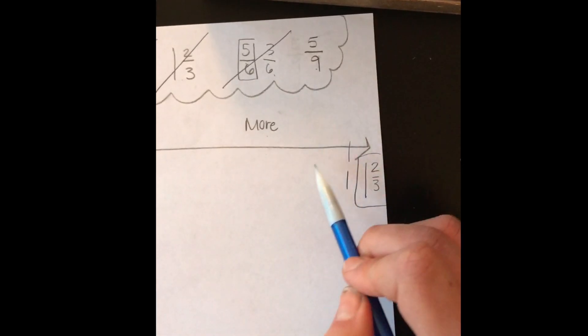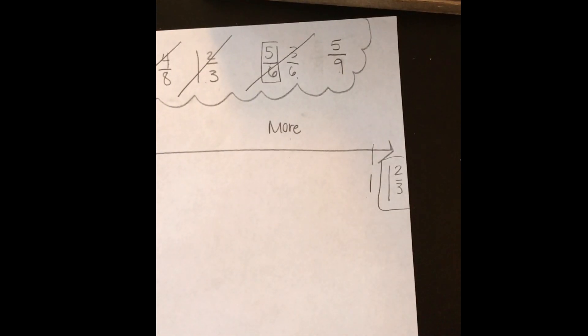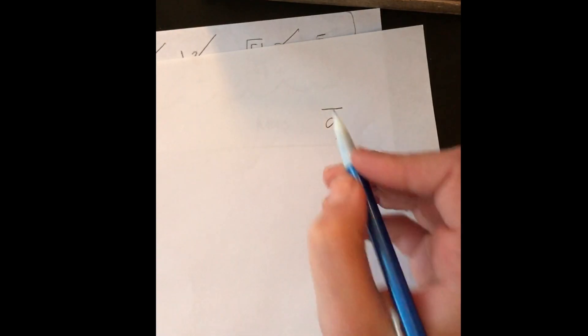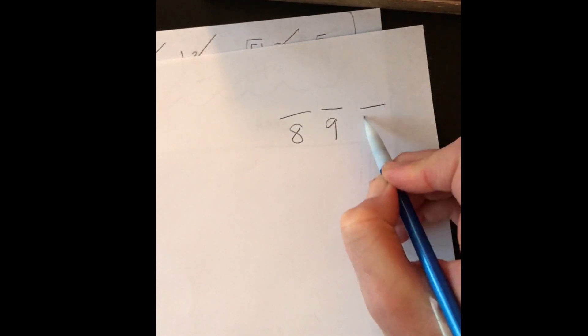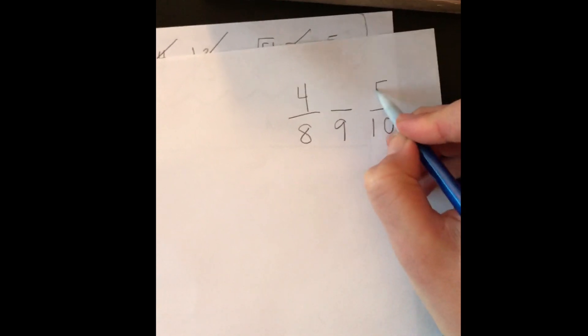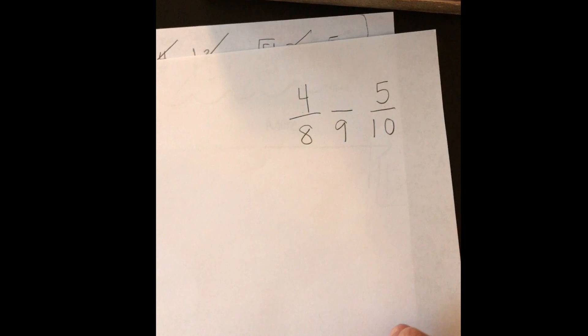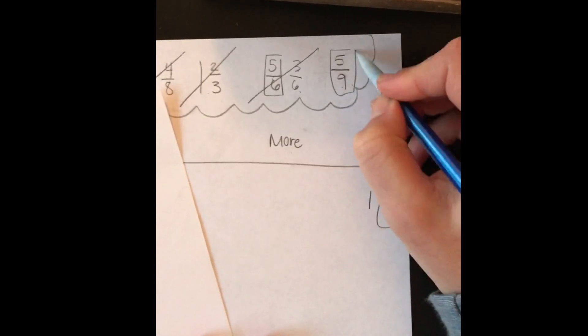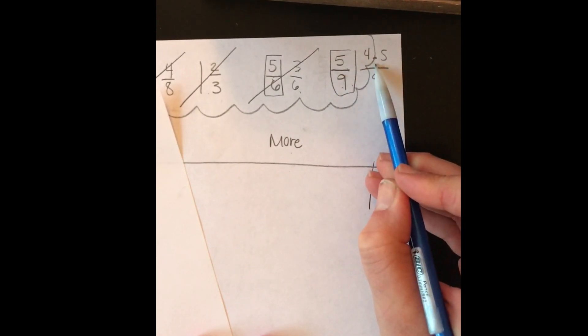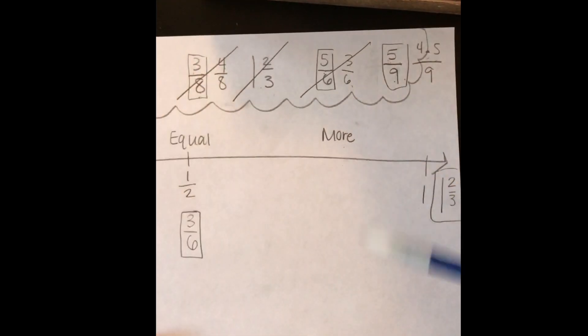Our last fraction here is 5 ninths. Now this one's a little bit trickier because 9 is an odd number, and finding half of an odd number can be a little bit more tricky than finding half of an even number. So if you don't know this in your head, what we do in class is we list the number 9 because that's our denominator, and then we have students list the number before, which is 8, and the number after it because those are even numbers. Half of 8 is 4 and half of 10 is 5, so in between 4 and 5 is 4 and a half, which we write like this, 4.5. So half of 9 is 4.5 over 9. And this one here is just a little bit bigger than half because 5 is bigger than 4 and a half. So this fraction is more than half.